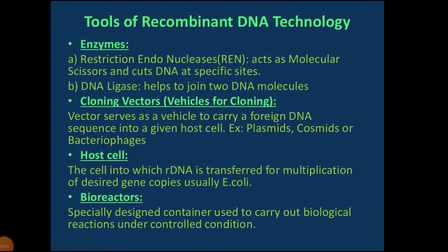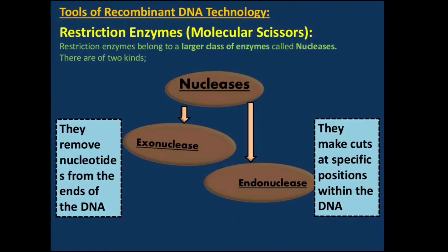Genetic engineering or recombinant DNA technology can be accomplished only if we have the key tools: restriction enzymes, polymerase enzymes, ligases, cloning vectors, and competent hosts. The first tool is restriction enzymes. The technique involves cutting the desired DNA segment and introducing it into a vector.